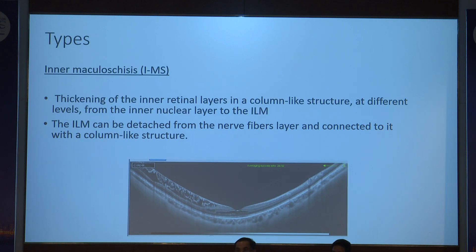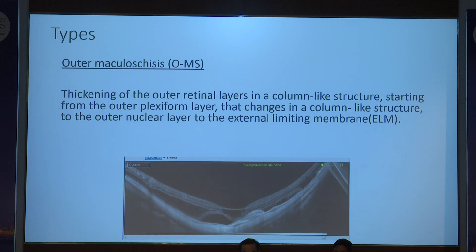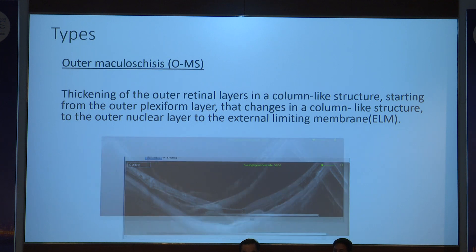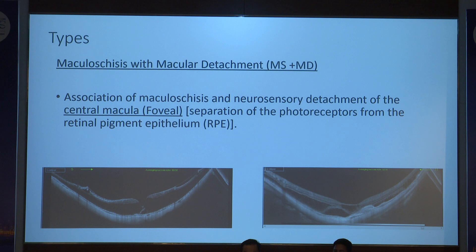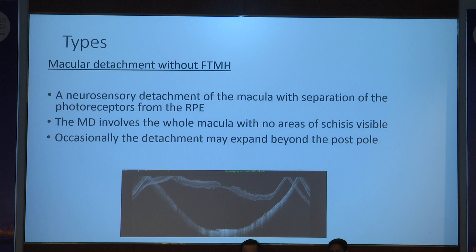Different types depend on structural changes. Inner macular schisis shows thickness of inner retinal layers in a column-like structure between inner layers and ILM. Outer macular schisis shows similar column-like structure from the outer plexiform layer up to the external limiting membrane. You can have both inner and outer macular schisis. Macular schisis with macular detachment has associated neurosensory detachment. Macular detachment without full-thickness macular hole shows neurosensory detachment with separation of photoreceptors from the RPE, involving the whole macula with no area of schisis visible.